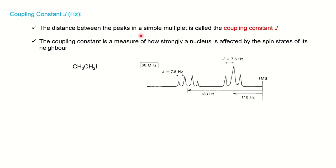You can notice the distance between the peaks in each multiplet. The first multiplet shows a spacing of 7.5 Hz, and the other multiplet also shows 7.5 Hz. Whatever distance exists between the lines of a multiplet is considered the coupling constant — it tells you how strongly a nucleus is affected by the spin state of its neighbor. Since both multiplets have the same J value of 7.5 Hz, it means the two signals are coupling with each other, confirming that CH3 and CH2 are neighbors.